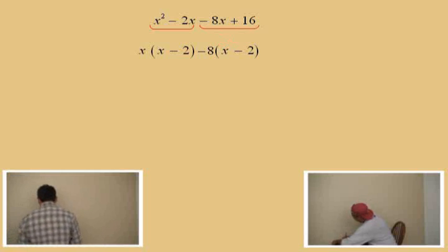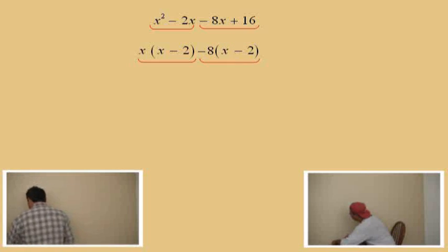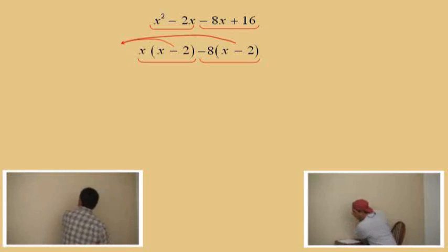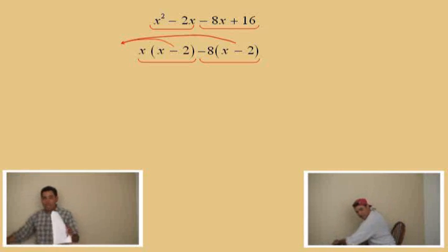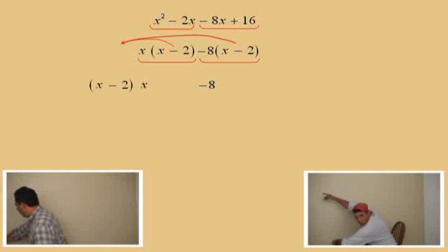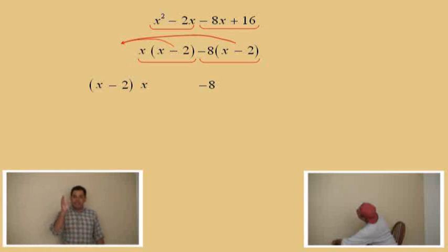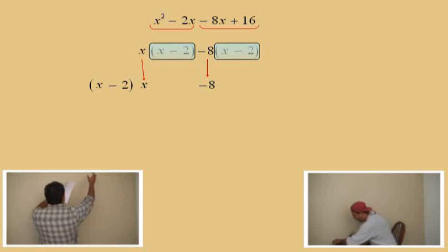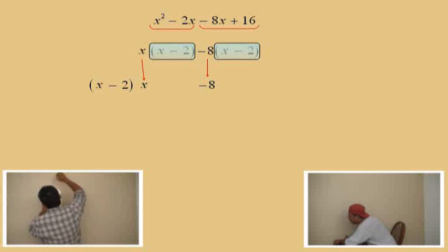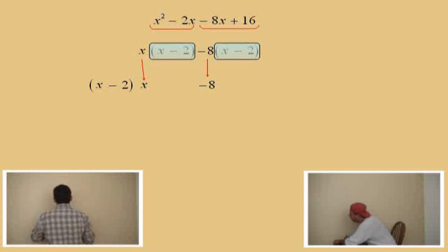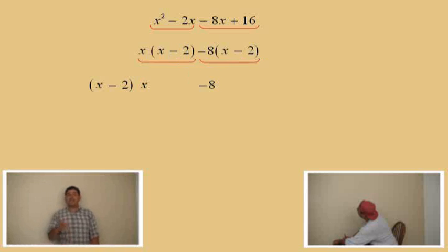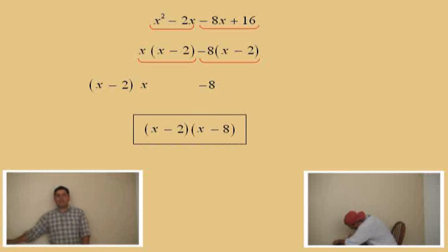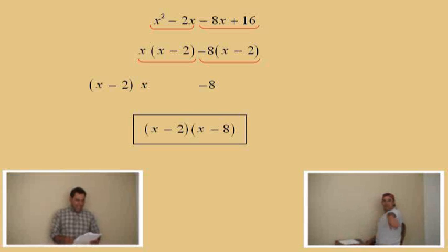Now we look at our groups and notice x subtract 2 is there, so we're going to take that x subtract 2 out — we're doing the reverse of multiplying polynomials. We take the x minus 2 to the front and notice what's left over: x subtract 8. When we took those out, we had the x and the negative 8. So we bring down x subtract 2 and then x subtract 8 — and there's your answer. Don't forget to box it.